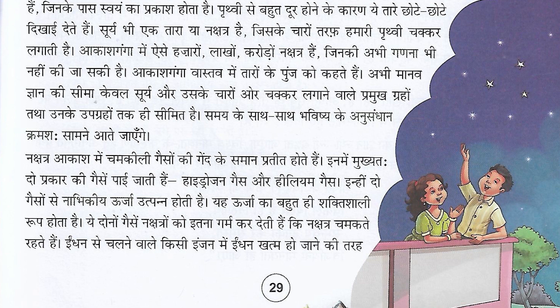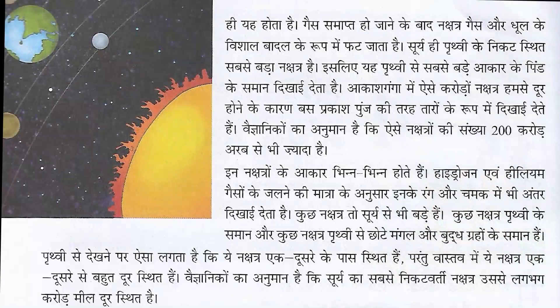यह दोनों गैसें नक्षत्रों को इतना गर्म कर देती हैं कि नक्षत्र चमकते रहते हैं। ईंधन से चलने वाले किसी engine में ईंधन खत्म हो जाने की तरह ही, gas समाप्त हो जाने के बाद नक्षत्र gas और धूल के विशाल बादल के रूप में फट जाता है — means blast हो जाता है। सूरे ही पृत्वी के निकट स्थित सबसे बड़ा नक्षत्र है। (Both gases heat the stars so much that they keep glowing. Just like fuel running out in an engine, when the gas is exhausted, the star explodes into a huge cloud of gas and dust. The Sun is the largest nakshatra located nearest to Earth.)